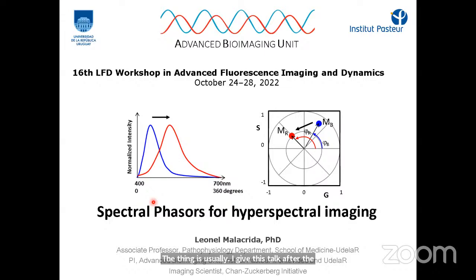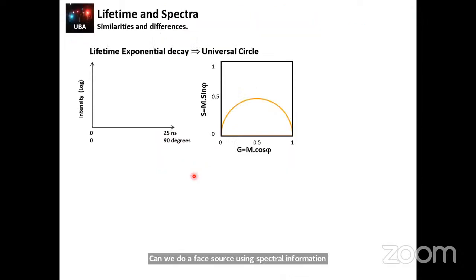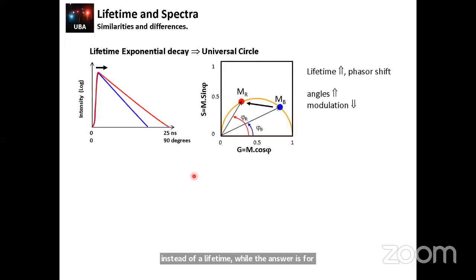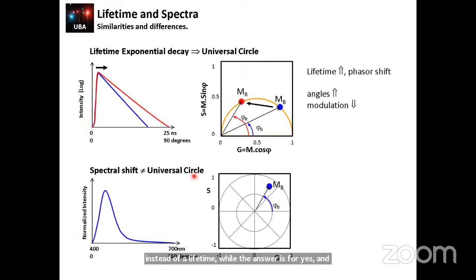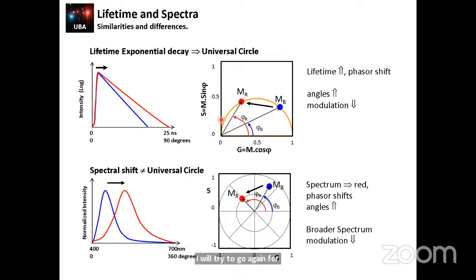Usually I give this talk after the FLIM, and the first question is: can we do phasors using spectral information instead of a lifetime? The answer is, of course, yes. The first thing I do is compare the two methods. But since we didn't have the FLIM talk, I will try to go again through the explanation they just did before.